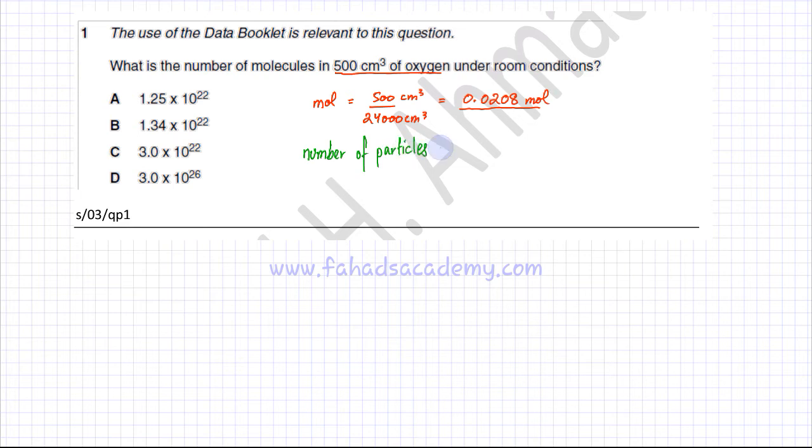If you have 0.0208 moles, you're going to multiply the moles by the number of particles in one mole, which is 6.02 × 10²³, Avogadro's number. You multiply moles by Avogadro's number to get the answer.